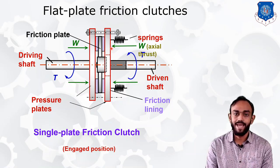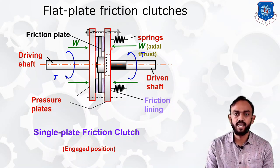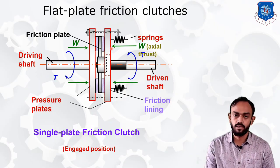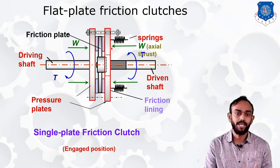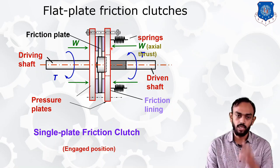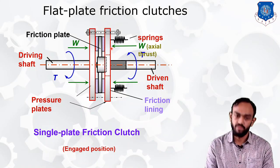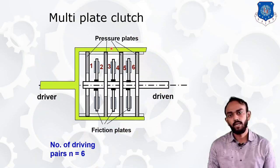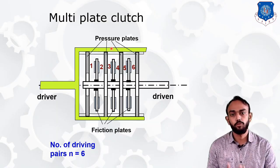The formula for this is the same as for friction bearings. There are two theories: uniform wear theory and uniform pressure theory. If the clutch is new, we apply the uniform pressure theory, but over time, due to wear, we apply the uniform wear theory.